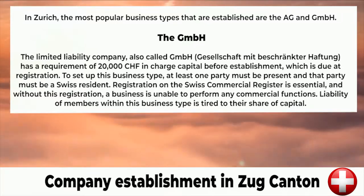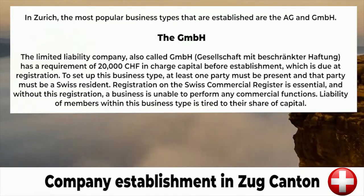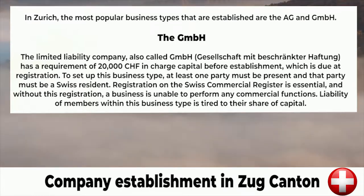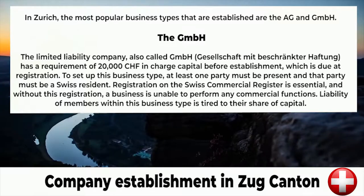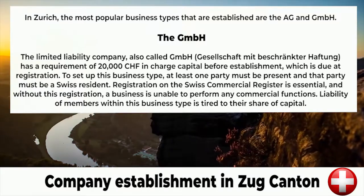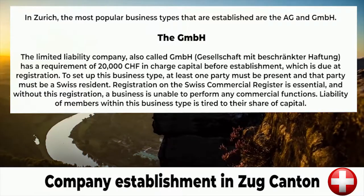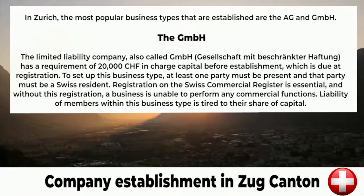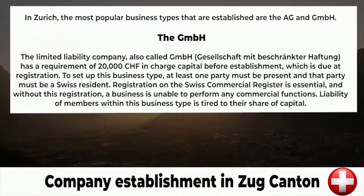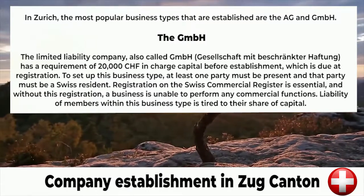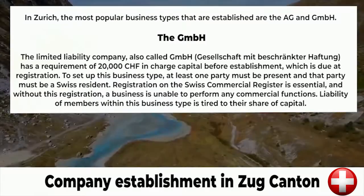The GmbH — the limited liability company — has a requirement of 20,000 Swiss francs in share capital before establishment, which is due at registration. To set up this business type, at least one party must be present and that party must be a Swiss resident.